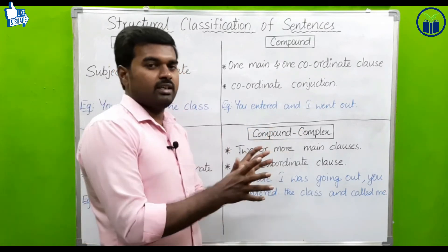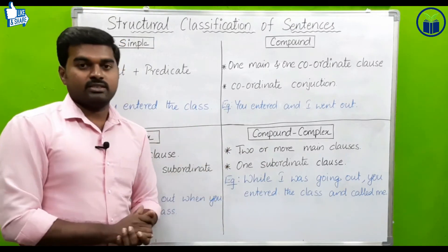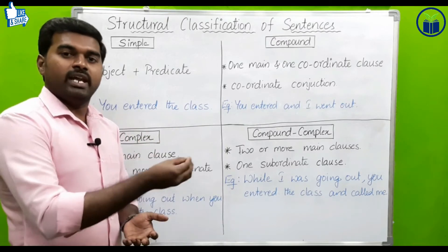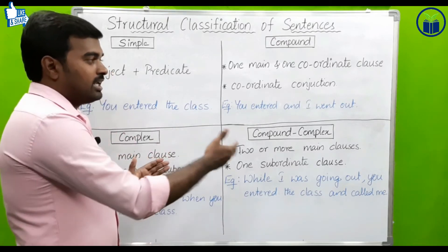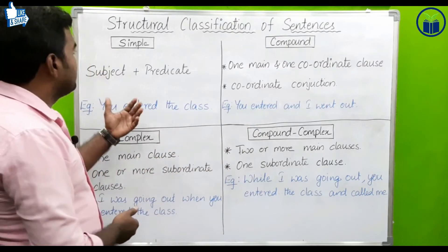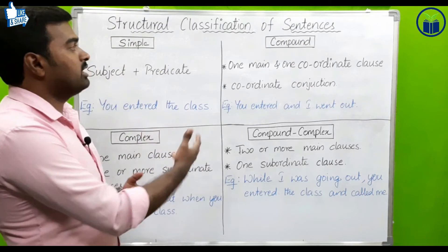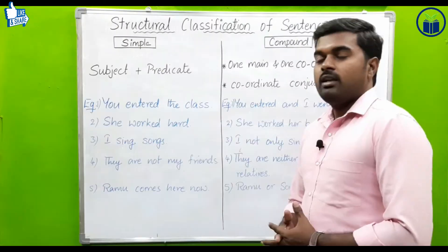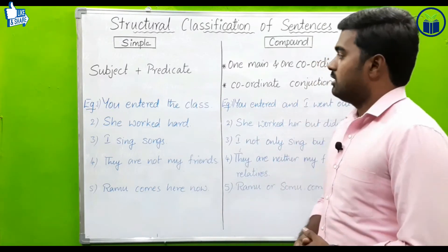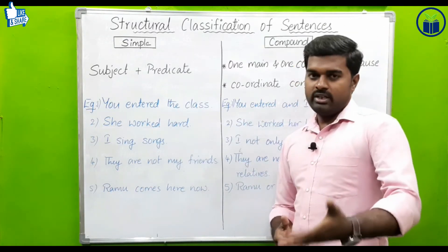Overall, these are the four types — simple, compound, complex, and compound-complex sentences — with their definitions and examples. Now let us look at simple and compound sentence examples in more detail. For simple sentence examples: number one, 'You entered the class' — we have already discussed this one.